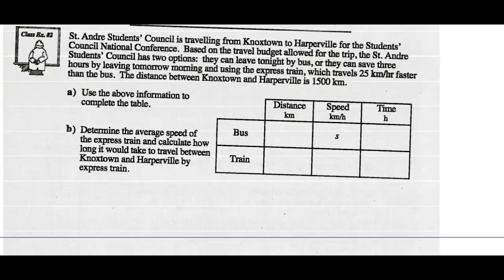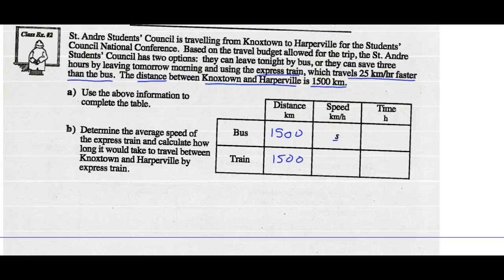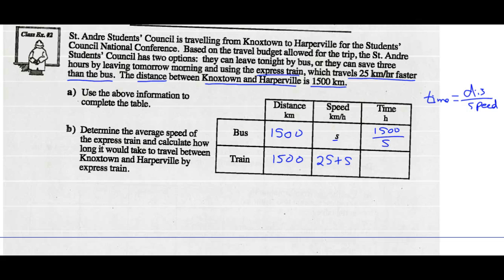Use the information above to complete the table. The distance from Knox Town to Harperville is 1,500 kilometers regardless of bus or train. We'll say the speed of the bus is S, and the express train is 25 kilometers per hour faster, so that's S plus 25. Time equals distance divided by speed, so the bus time is 1,500 over S and the train time is 1,500 over (25 plus S).